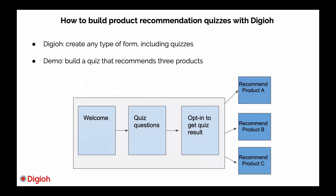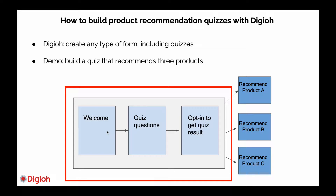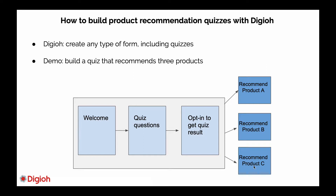With Digio you can build a form that has up to four extra pages plus a thank you page, so that's already a pretty big form. You can also link this form to other forms depending on the responses. In this example, there's going to be a first form composed of a welcome page, quiz questions, and an opt-in form where the visitor can submit their email address to see the quiz result. Then this main form is going to be linked to three different forms linking to three different products on your website.